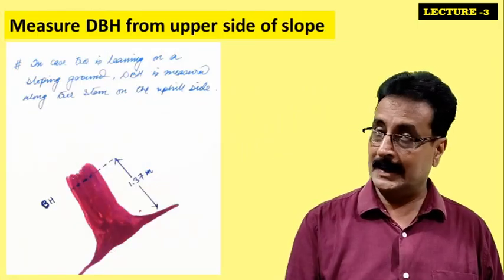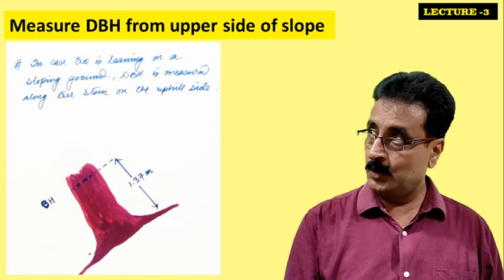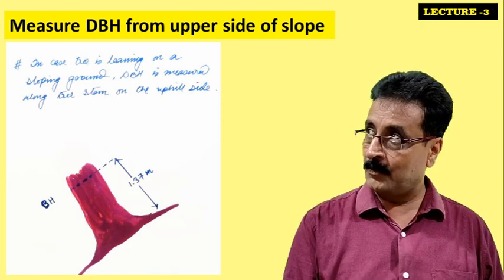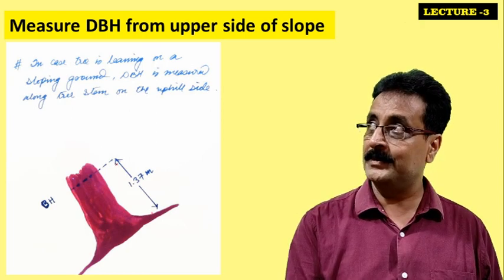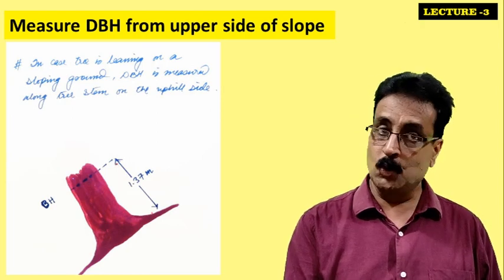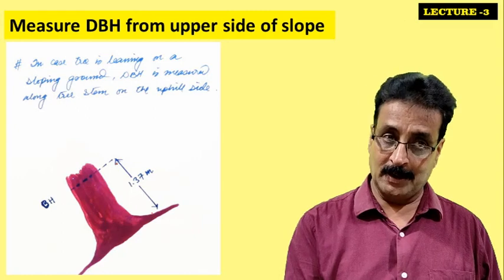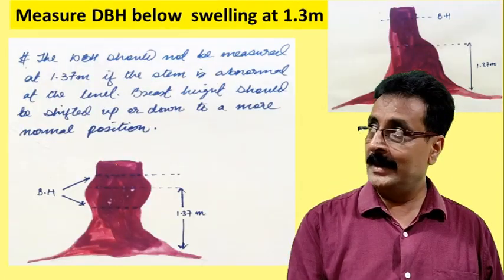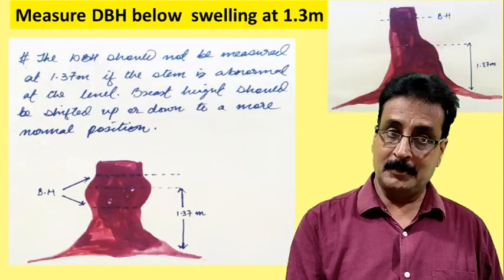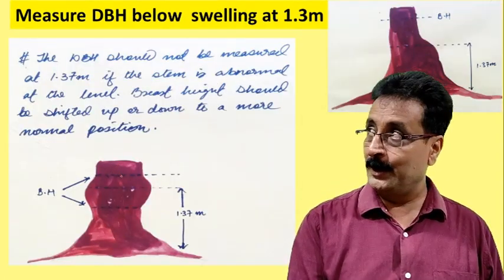The second rule applies to sloping ground. On a slope, you do not measure from the downhill side. From the uphill side you take the measurement at 1.37 meters along the stem. This is rule number two.